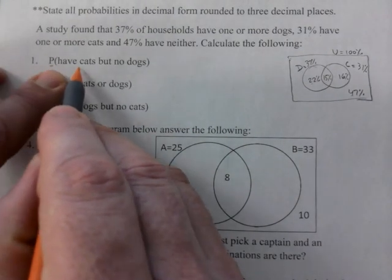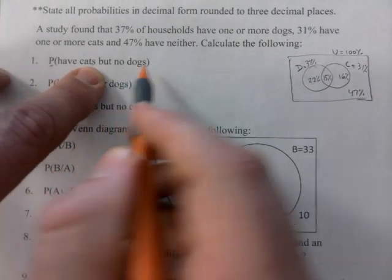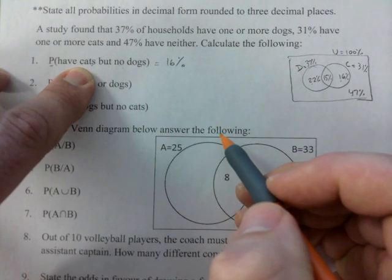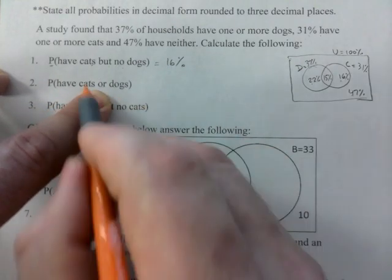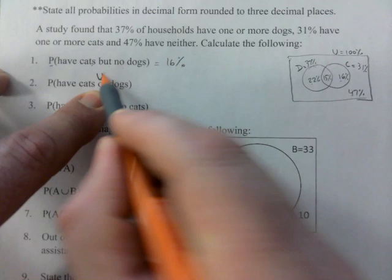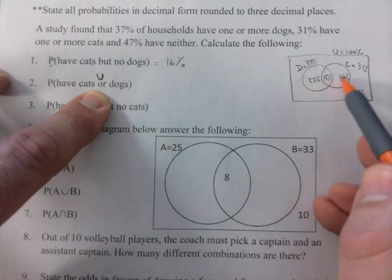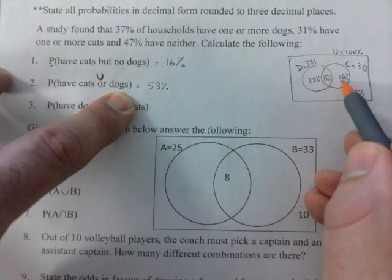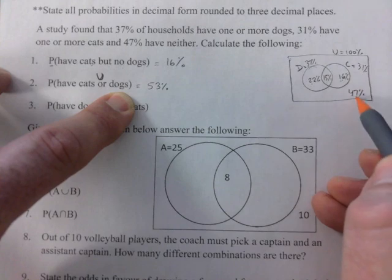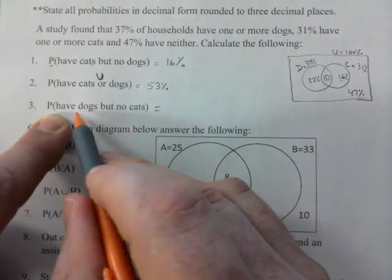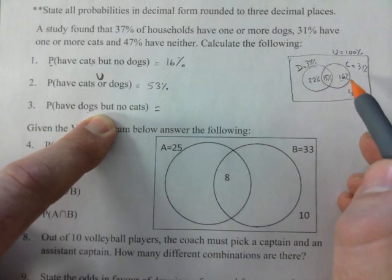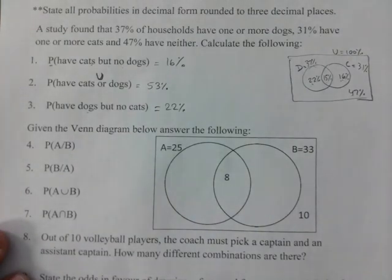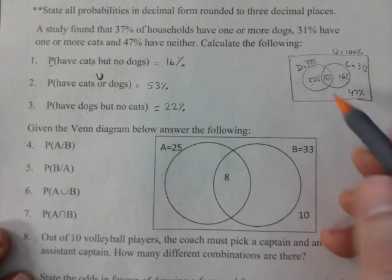So I'm reading off my key here. If you check and add up every section, you should get 100%. If you don't, you're in trouble. So probability of cats but no dogs - that's basically cats only, so that'd be 16. Cats or dogs - this is the OR, so it's anything in the sets here that are represented, that'd be 53. So just add up these three sections or go universal minus 47. Have dogs but no cats - that's the dogs only, so that's 22.